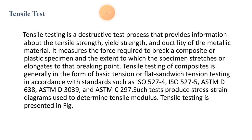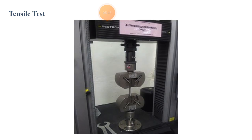In mechanical testing, one of the primary tests is tensile strength. Tensile testing is a destructive process that provides information about the tensile strength, yield strength, ductility, and metallic material behaviour. It measures the force required to break a composite or plastic specimen and the extent to which the specimen stresses are elongated to the breaking point. Tensile testing of components is generally in the form of flat sandwich tension testing in accordance with standards such as ISO-527, ISO-52745, ASTM D-638, ASTM D-3039, and ASTM C-297. Such tests produce a stress-strain diagram used to determine tensile modulus and strength. Tensile testing is presented in the next figure.